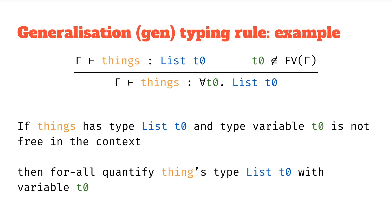But we'll say there's this variable t0, type variable t0, that is their type, and this t0 is not in the set of free variables in the context. Well then we can say things has the type for-all t0, list of t0. So we've added this for-all quantifier t0 to our type, because it wasn't in the free variables in the context.